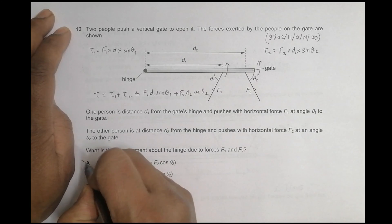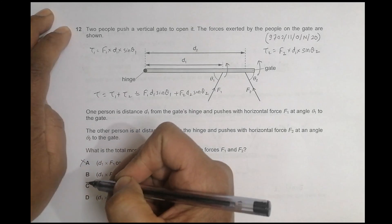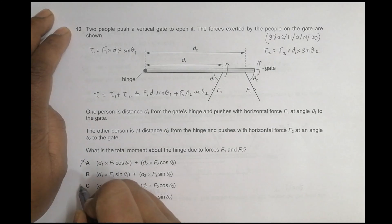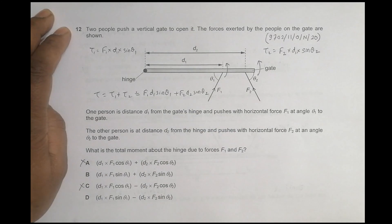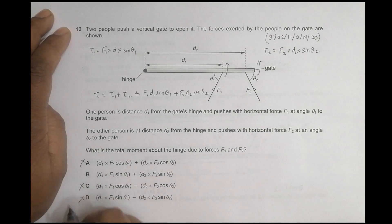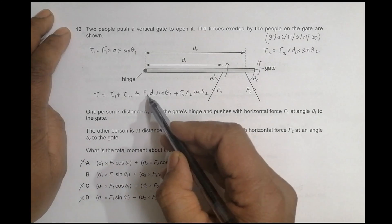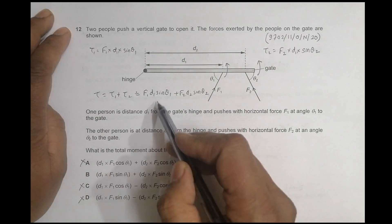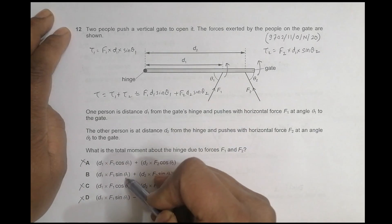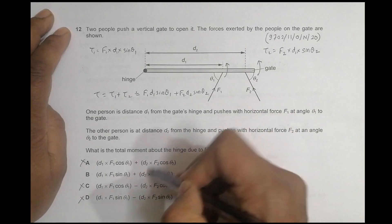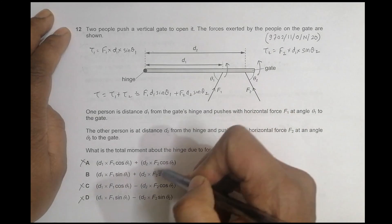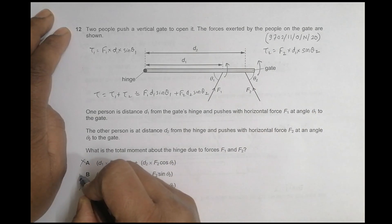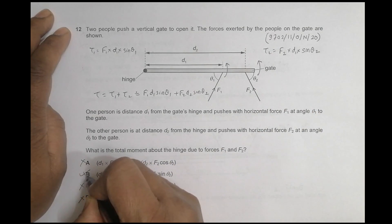Looking at the answer choices: one option has cos(theta), which is wrong. Another has a minus sign, which is also wrong since we have no negative term. The correct expression is f1 × d1 × sin(theta 1) + f2 × d2 × sin(theta 2), so that should be the correct choice.